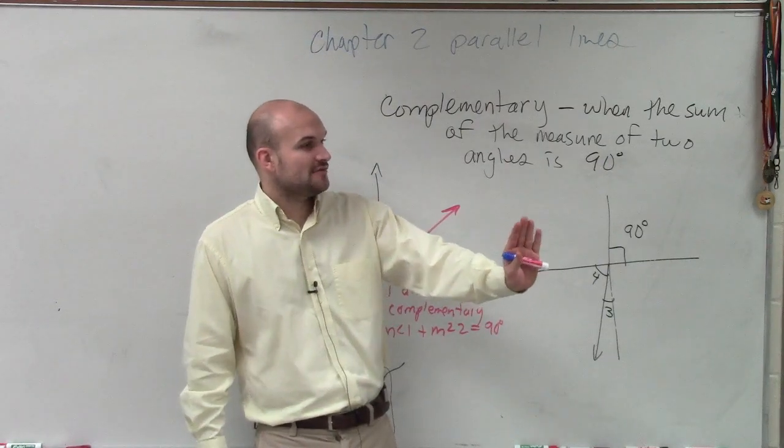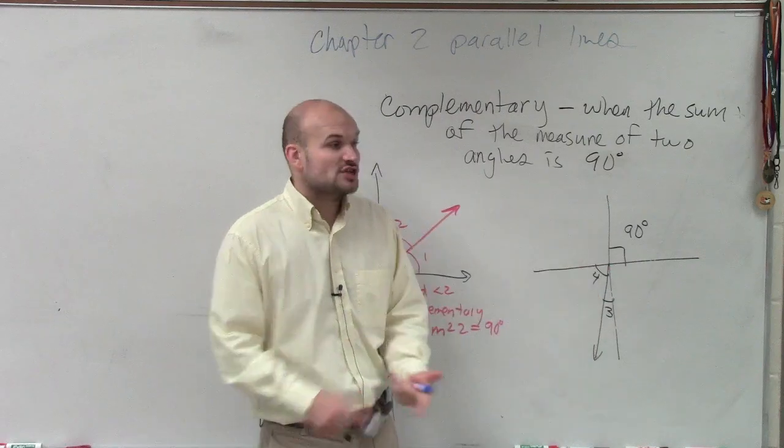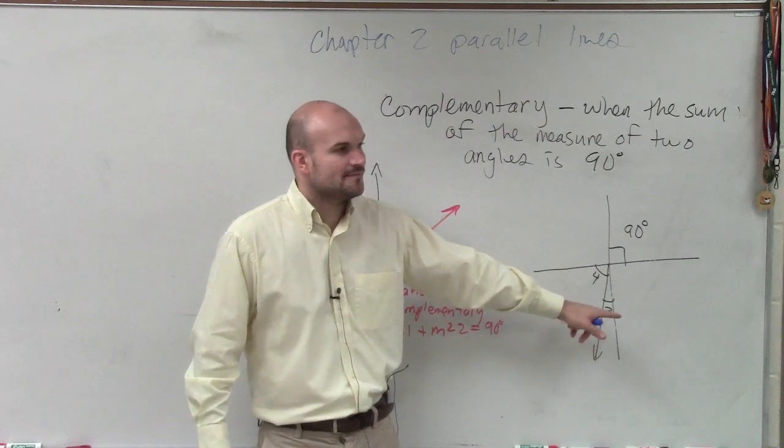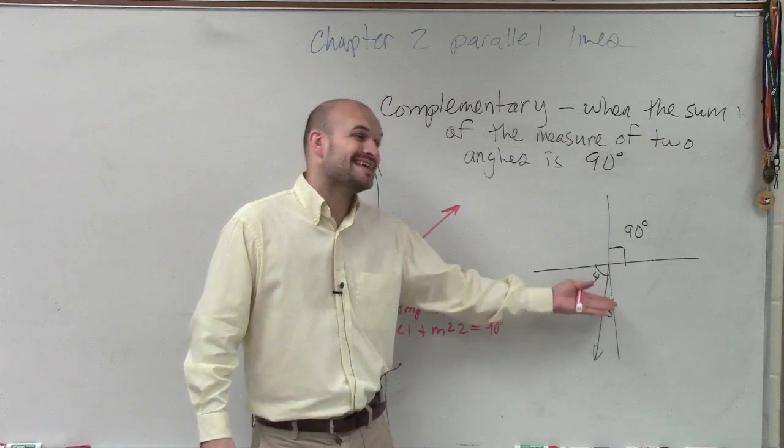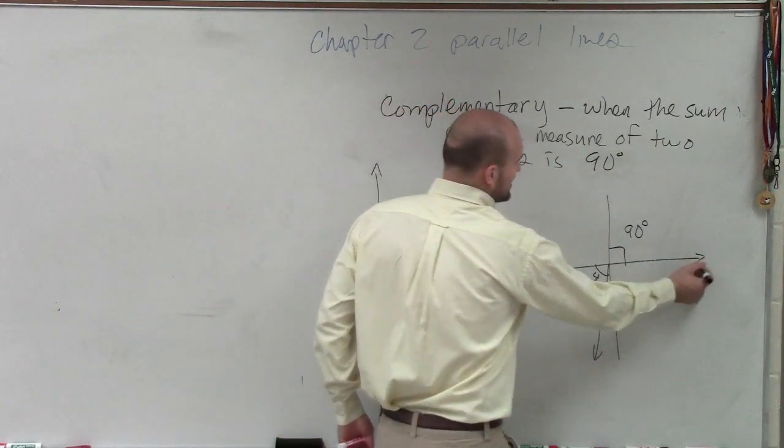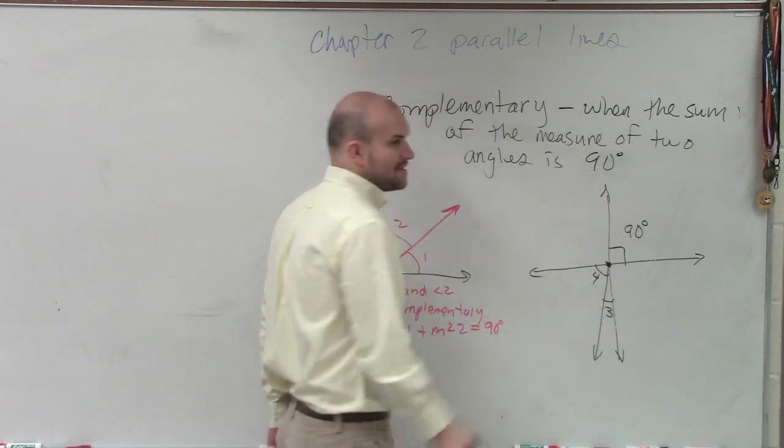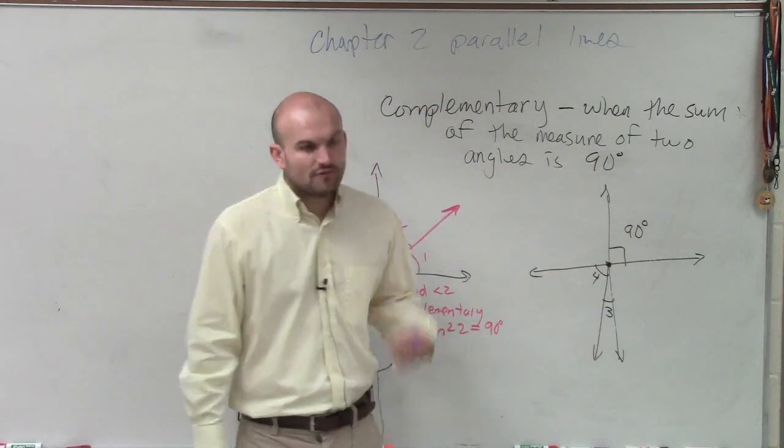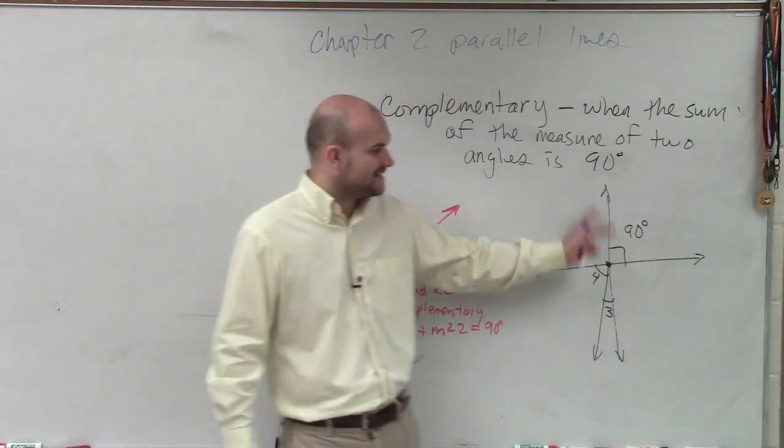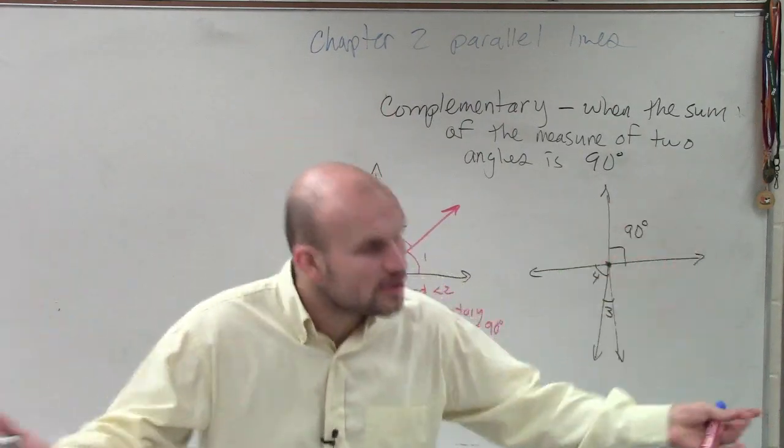If we go back to our definition of adjacent, adjacent angles share the same vertex and the same side. Does this angle and that angle share the same side? No, so they can't be adjacent. Let's go back to vertical angles. Vertical angles are created by two intersecting lines. Are these created by two intersecting lines? Yes. Do they share the same vertex? Yes. Vertical angles also do not have any sides in common. Do these have any sides in common? No.